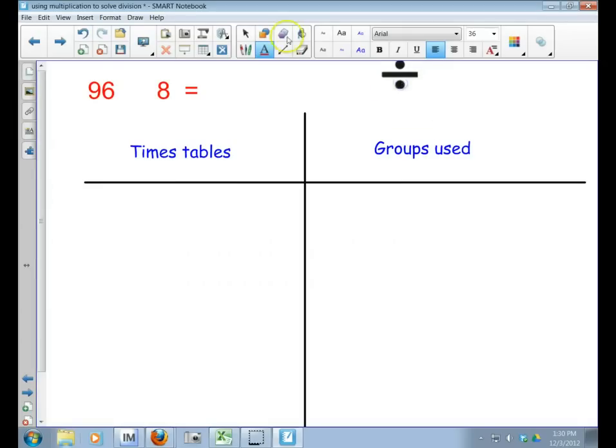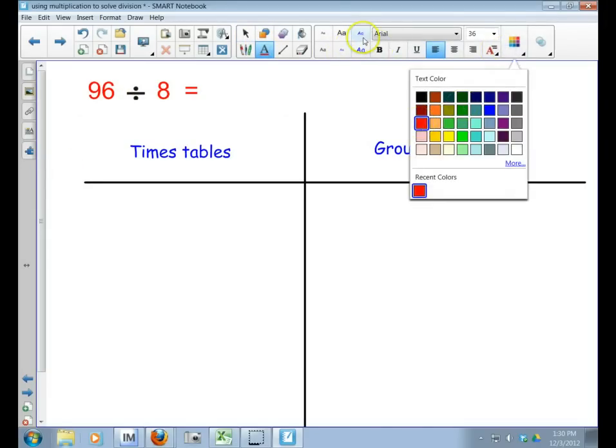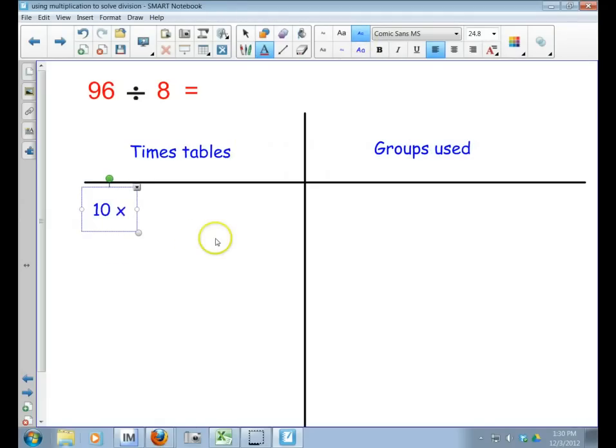So we've got 96 divided by 8. Just like with the multiple tower, it's easy to start with groups of 10. I know 10 times 8 equals 80, so I've taken care of 10 groups so far, and that equals 80 of my Snickers bars.